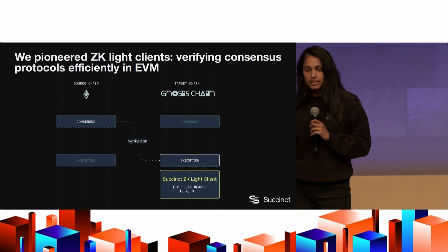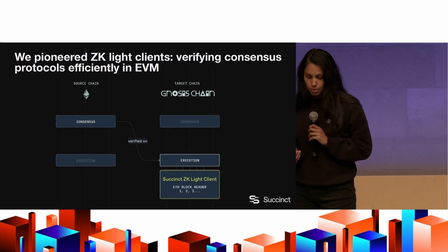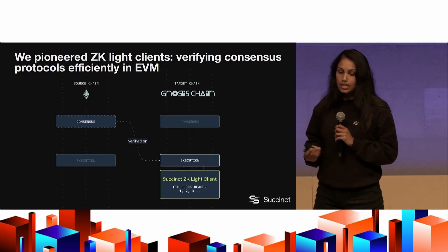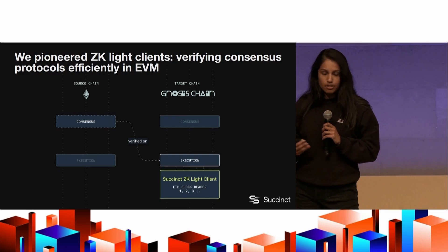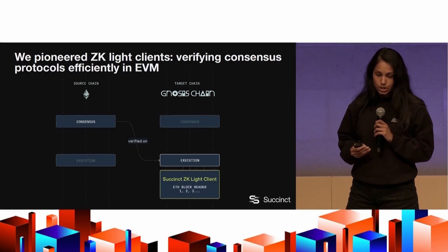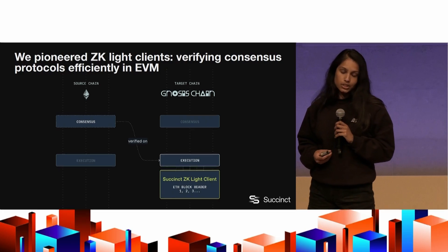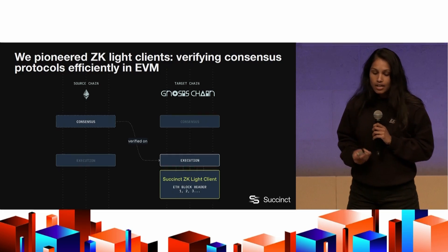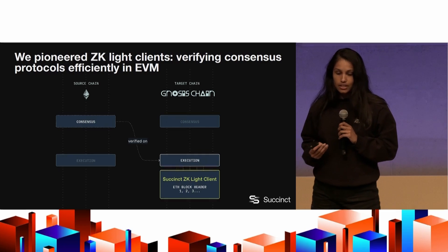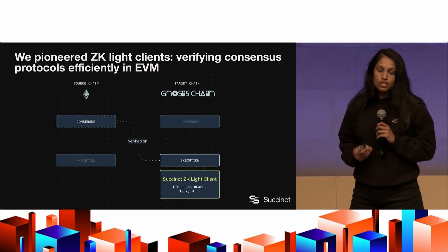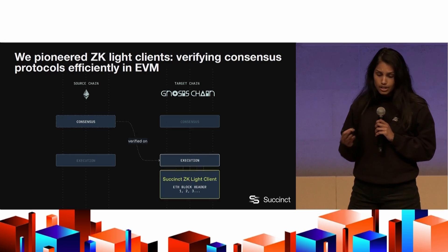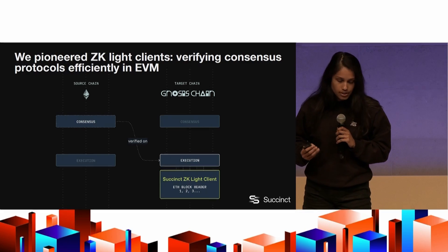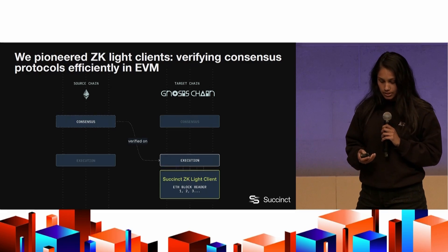This solves a lot of existing problems with interoperability protocols today, where generally if you want to transmit information or data between one chain and another, you have to rely on a trusted multisig or some trusted group of entities. With Succinct on-chain ZK light clients, you can do interoperability without these trust assumptions and get much more secure interoperability.